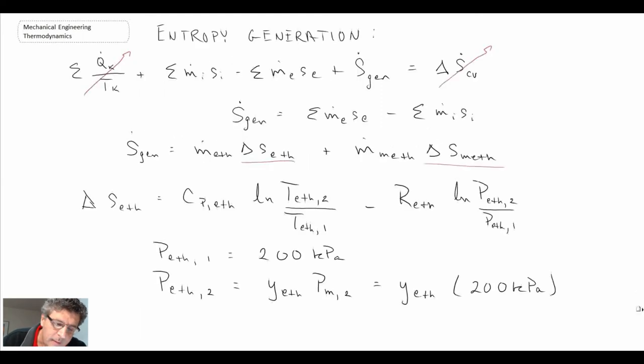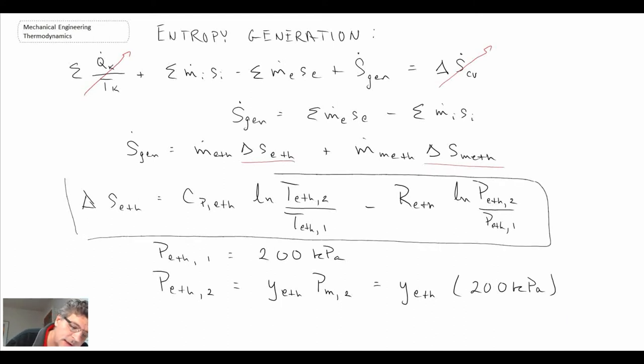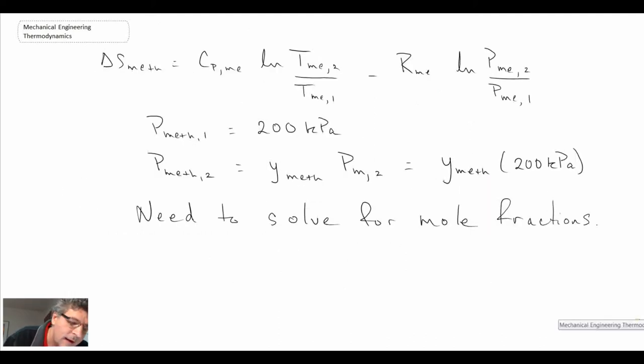And once we have that, we can go back a couple of steps. Where was it? It was right in here. Where we had the expressions for evaluating the change. And that was change in entropy for ethane. And similarly the change in entropy for methane.